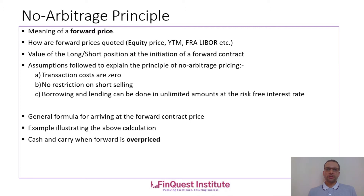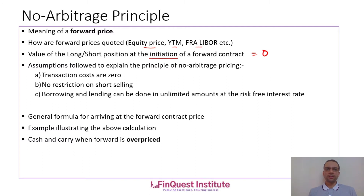Now let us understand the meaning of a forward price. A forward price can be considered as a no-arbitrage price which is pre-decided at contract initiation, and this is the price at which the asset will be transacted at the expiration or delivery date of the forward contract. Depending on the underlying, we can have different types of forward prices — an equity price for a share, YTM for a bond, or a LIBOR quotation for a forward rate agreement. The value for the long or short position at initiation of the forward contract is zero. This is why we call it a no-arbitrage price — neither counterparty should be able to make money at the expense of the other.